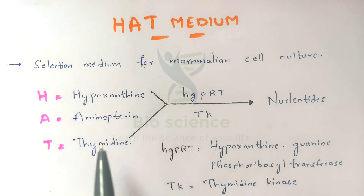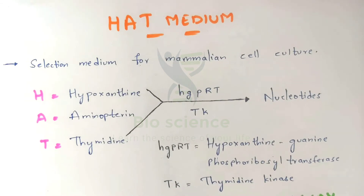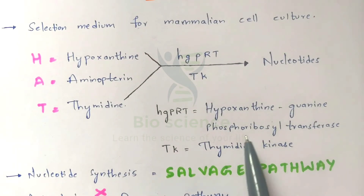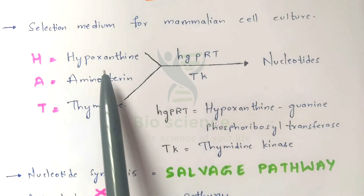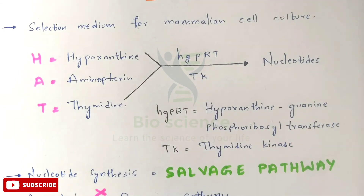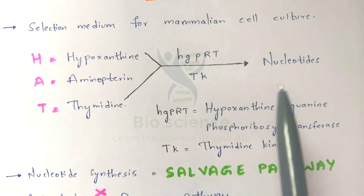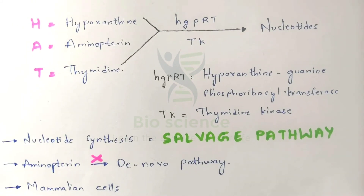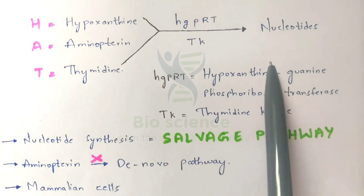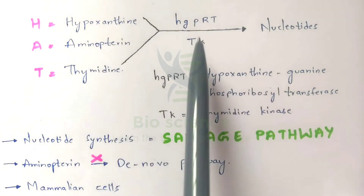Hypoxanthine and Thymidine bases can be converted into nucleotides using enzymes called HGPRT and TK. HGPRT stands for Hypoxanthine Guanine Phosphoribosyl Transferase, and TK stands for Thymidine Kinase. HGPRT converts Hypoxanthine into nucleotides, while TK converts Thymidine into nucleotides. This process of nucleotide synthesis is called the salvage pathway.